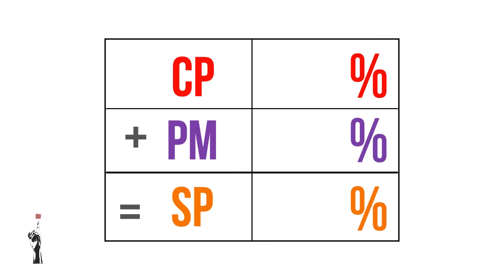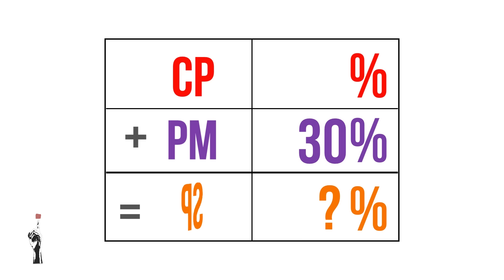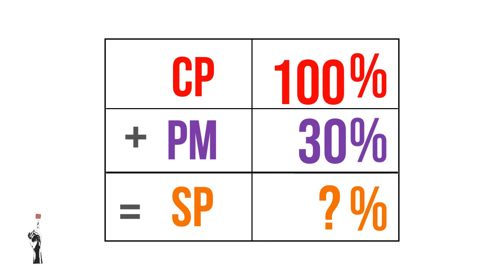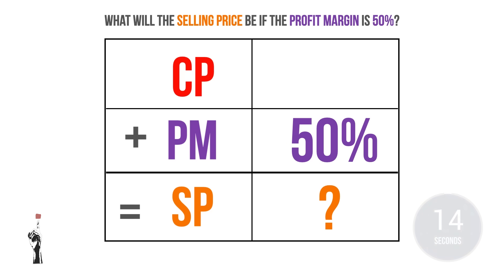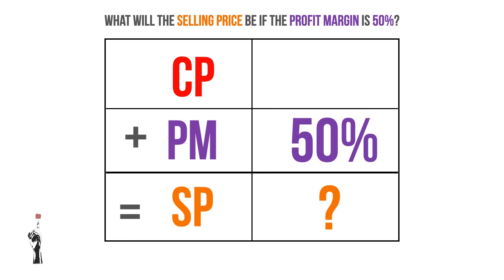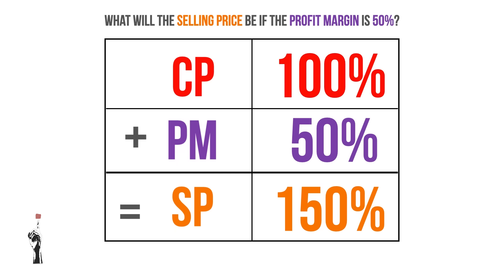We will express values as percentages because the profit margin is a percentage. There is a very important rule: we always start with 100%, so the cost price will always be 100%. For example, if a business has a profit margin of 30%, the selling percentage will be 100% plus 30%, which equals 130%. Now it's your turn — what will the selling price percentage be if the profit margin is 50%? The answer: 100% plus 50% equals 150%, which is the selling price percentage.